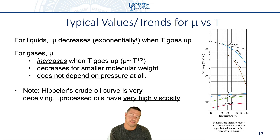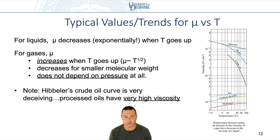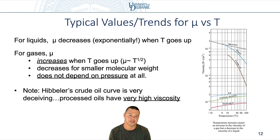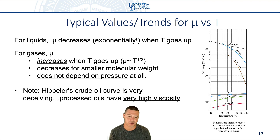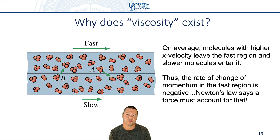Looking at this graph of viscosity versus temperature, you might notice something strange — on this curve, oil actually has a lower viscosity than water. That is technically true, but only for crude oil, which is unprocessed and has a whole bunch of other stuff mixed in. Processed oils used as lubricants actually have extremely high viscosity, so this can be a misleading curve.